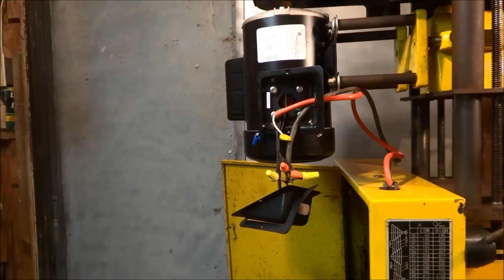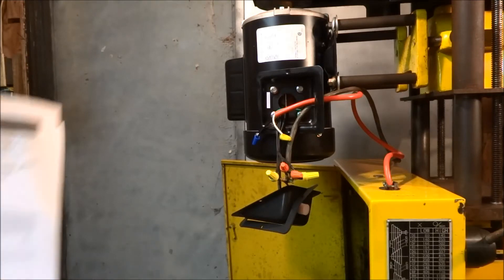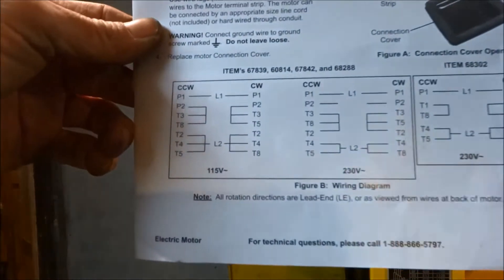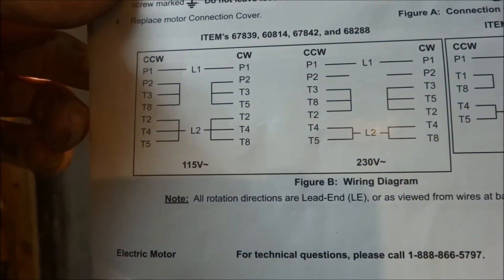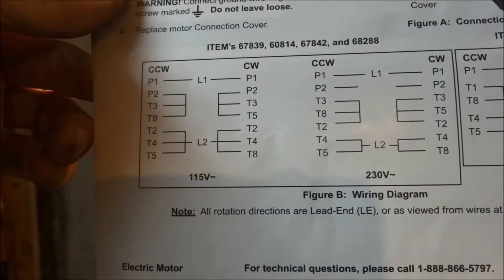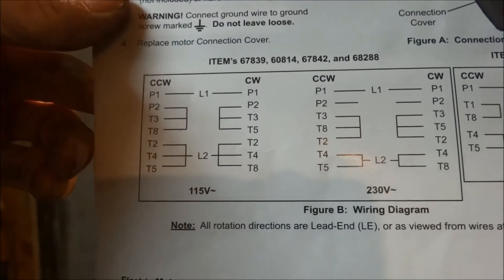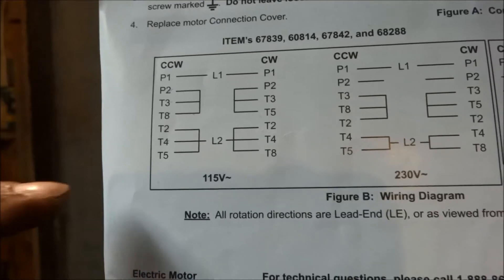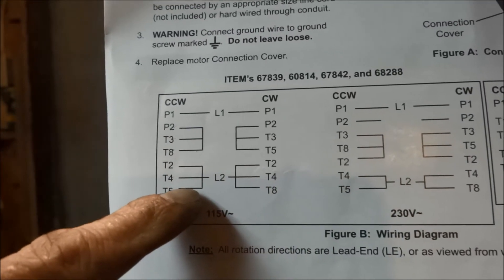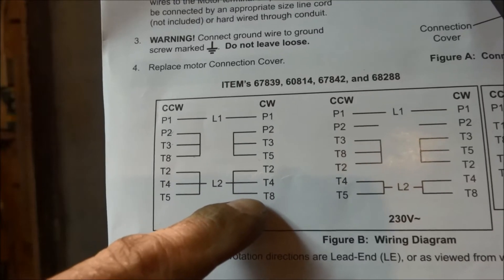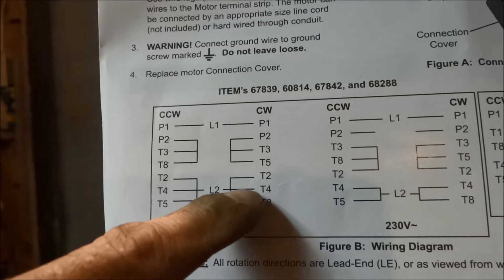The electric motor comes with a clockwise counterclockwise wiring diagram. It can be wired either for 115 or 230 volt. I'm running 115 volt. Five and eight are basically your reversing wires. If you'll notice, eight's here connected with T2 and T4.